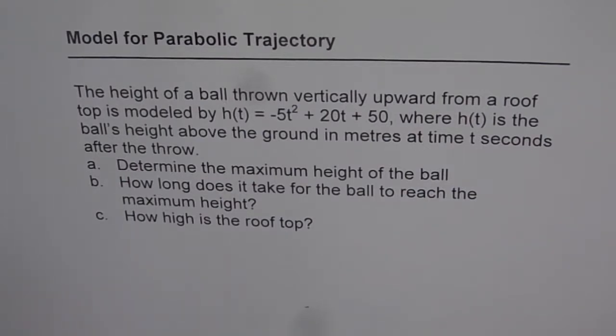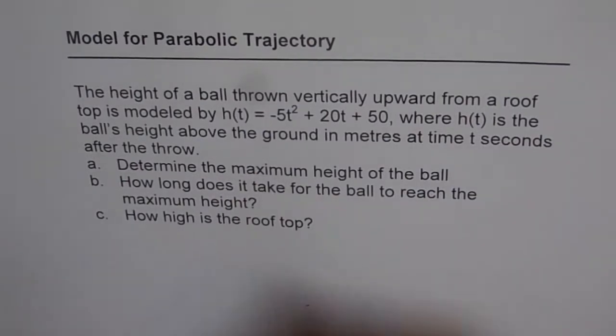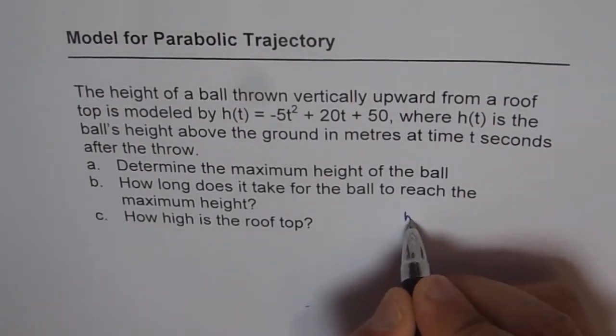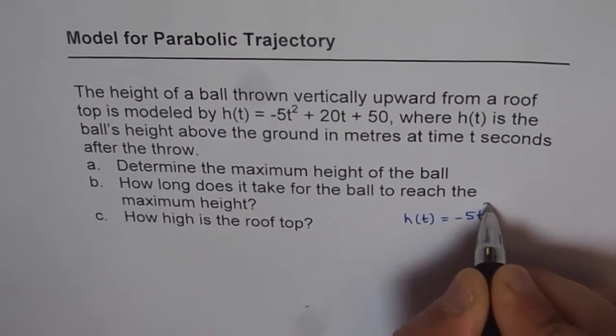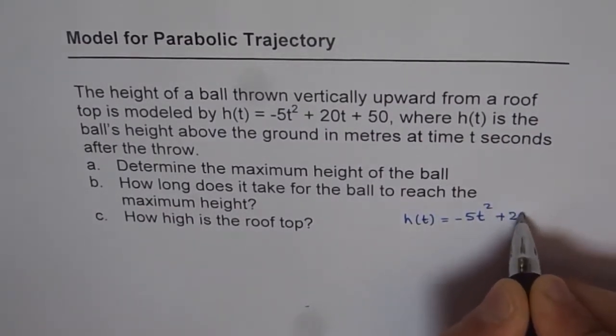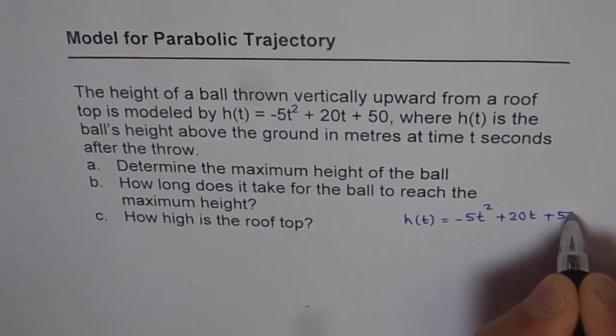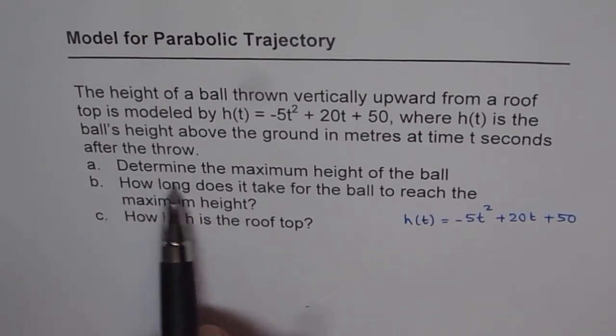Let me write down the equation once again and then we will analyze the situation. So the equation given to us is h(t) equals minus 5t squared plus 20t plus 50. Part A is determine the maximum height of the ball.